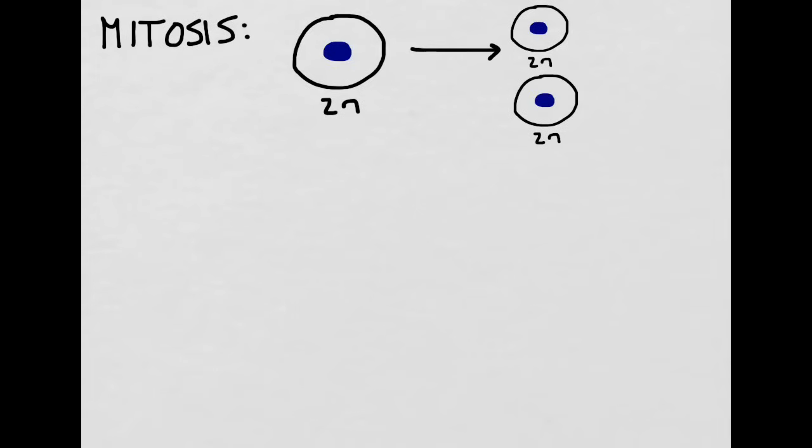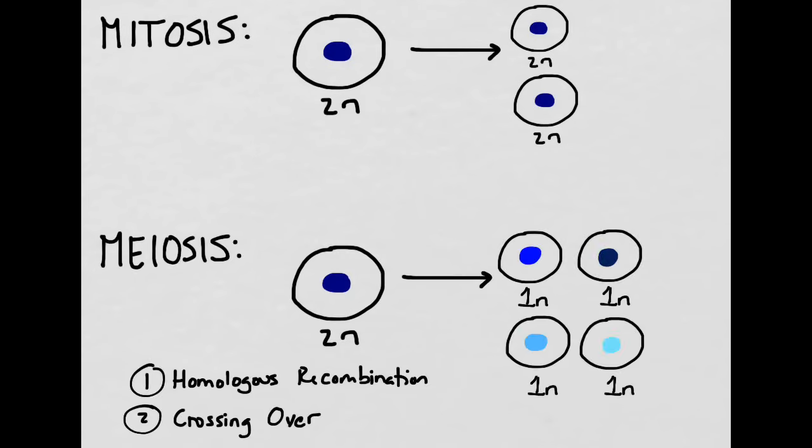Remember that in mitosis, a diploid parent cell splits into two identical diploid daughter cells. In meiosis, we go through two rounds of division, transforming a diploid parent cell into four different daughter cells, each of which are haploid. Each of these has genetic variation thanks to two procedures called crossing over and homologous recombination. Every single daughter cell is different from the other daughter cells as well as being different from the parent.